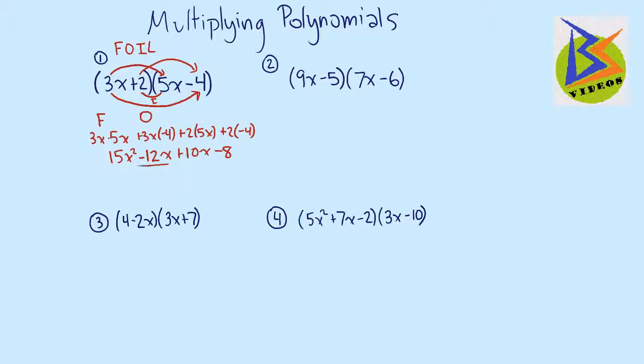And then what we need to do is combine our like terms. So we say, okay, 15x squared, there is no like term to that. Minus 12x plus 10x is a negative 2x minus 8. And since these aren't like terms, there's nothing else we can do.